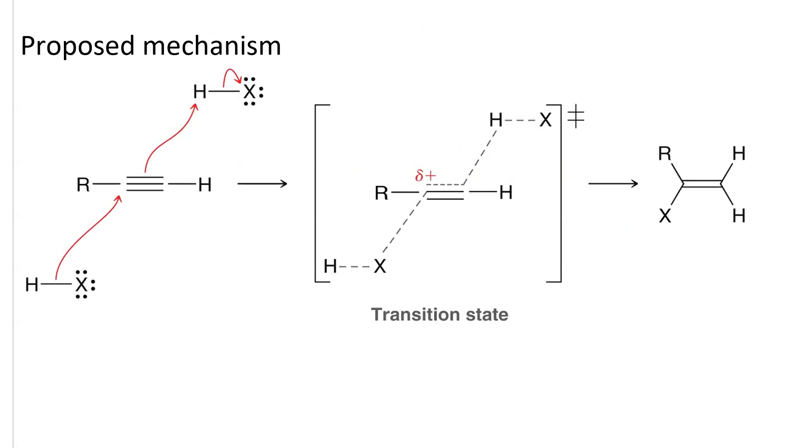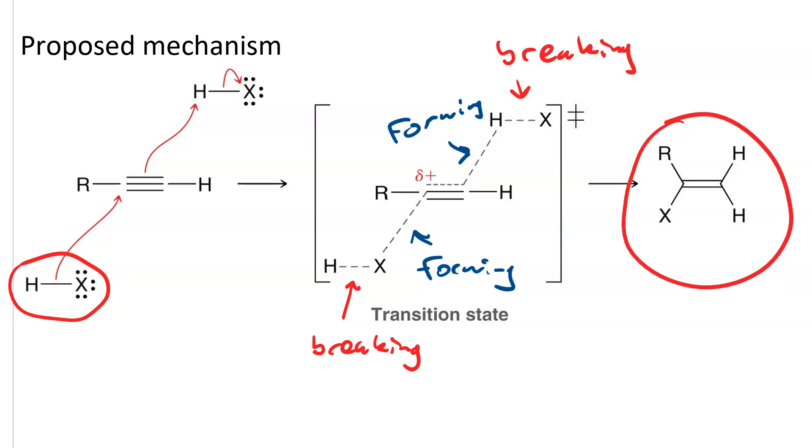Now, this is not a sure thing, but a proposed mechanism that makes sense is for the halogen on one equivalent of acid to attack in the Markovnikov position, and then the pi bond to take a proton from another equivalent of the acid, forming this transition state, where this bond is breaking, this bond is forming, this bond is forming, and this bond is breaking, to give you your vinyl halide.